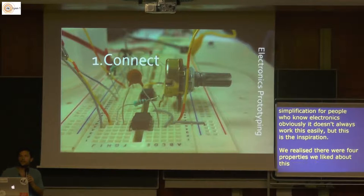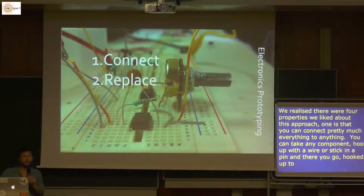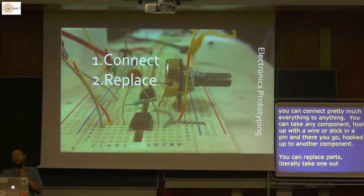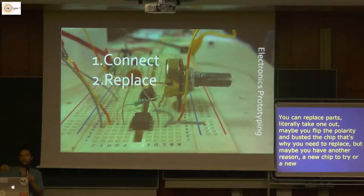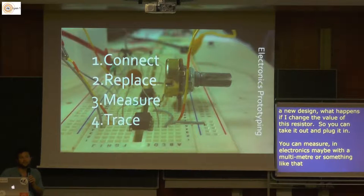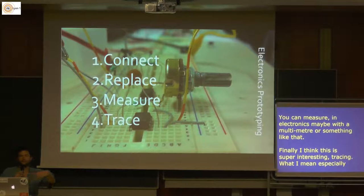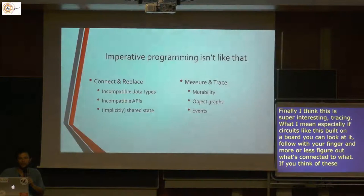We realized there are four properties we really liked about electronics. First, you can connect pretty much everything to anything — take any component, hook it up with a wire, and there you go. Second, you can replace parts — take one chip out and plug in a new one. Third, you can measure things with something like a multimeter or oscilloscope. And fourth — this part is super interesting — tracing: when a circuit is built out on a breadboard, you can look at it and follow it with your finger and more or less figure out what's connected to what.